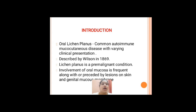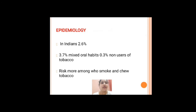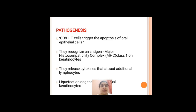The first lesion is lichen planus. Lichen planus is an autoimmune disease; it is a very common mucocutaneous disease and it was described by Wilson in 1869. You might have heard of this before as a pre-malignant condition. In lichen planus, involvement of oral mucosa is more frequent and it is often preceded by skin lesions. It occurs in about 2.6 percent of the Indian population.